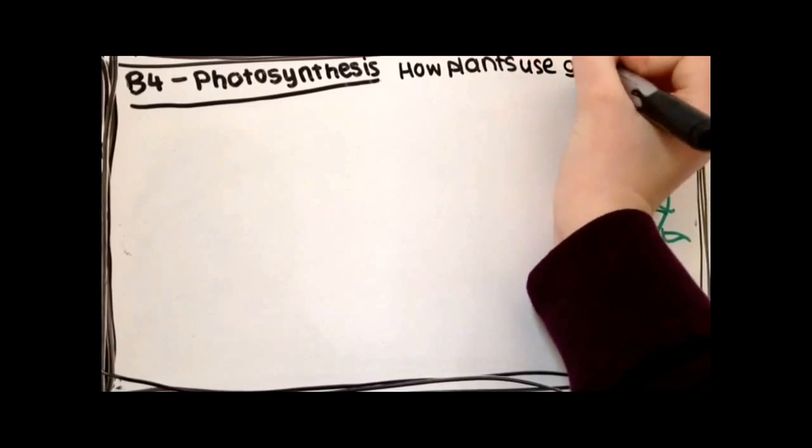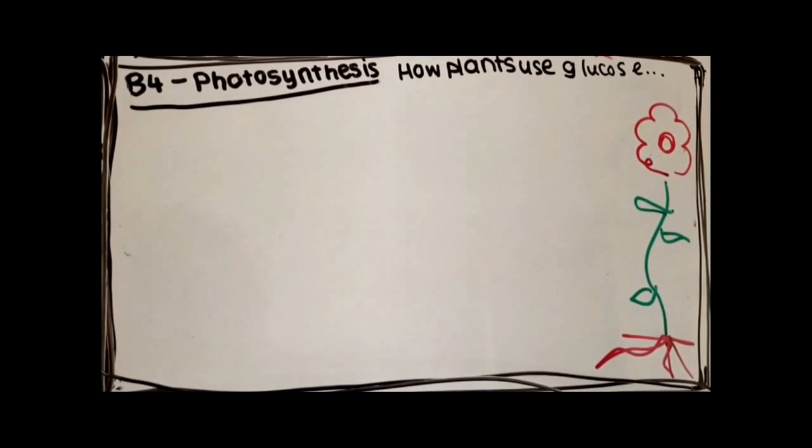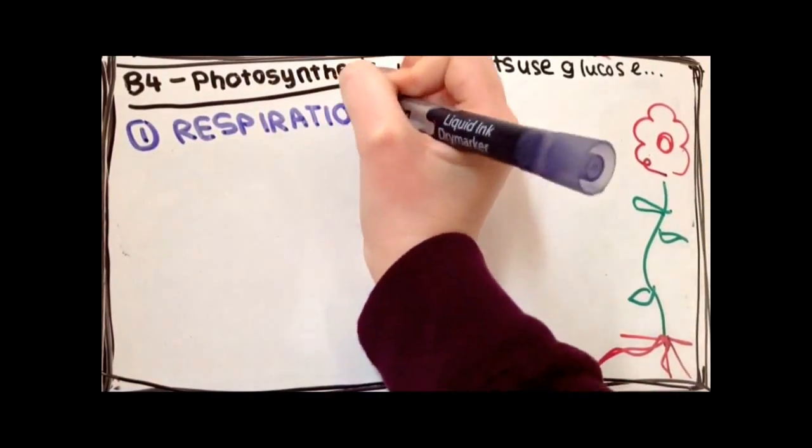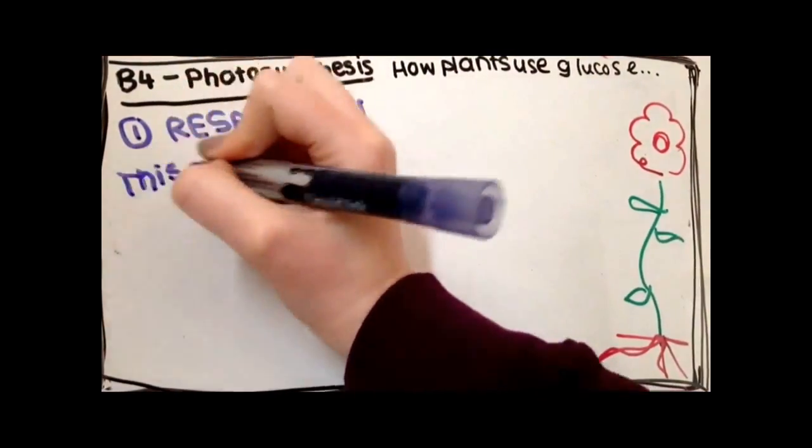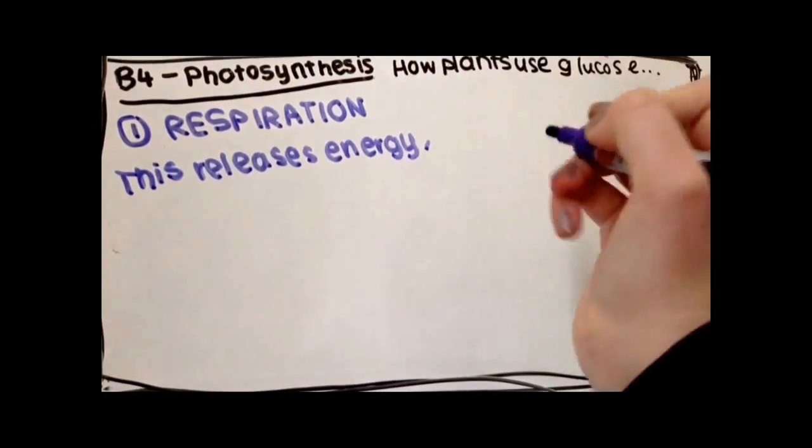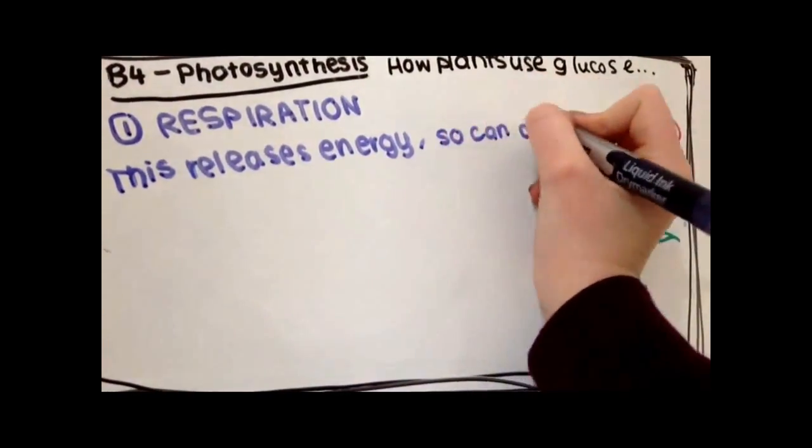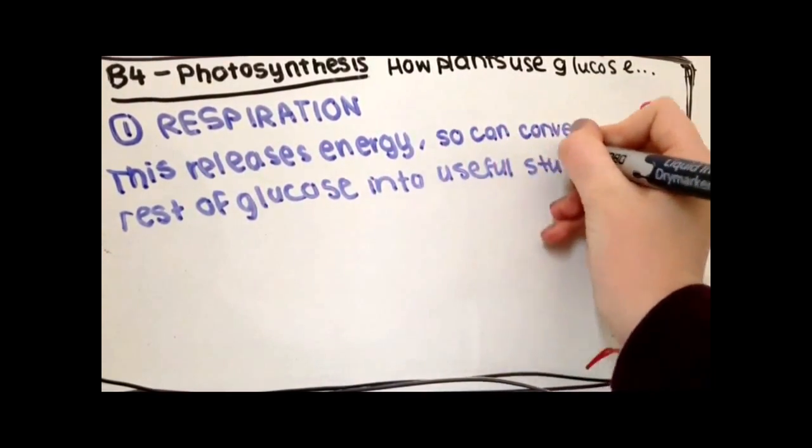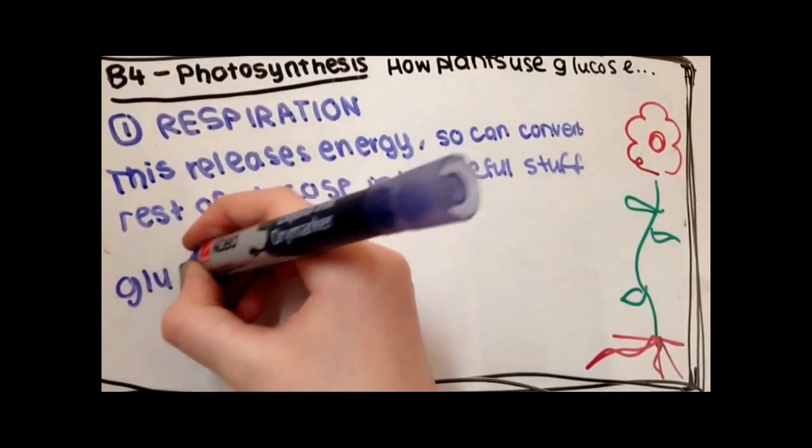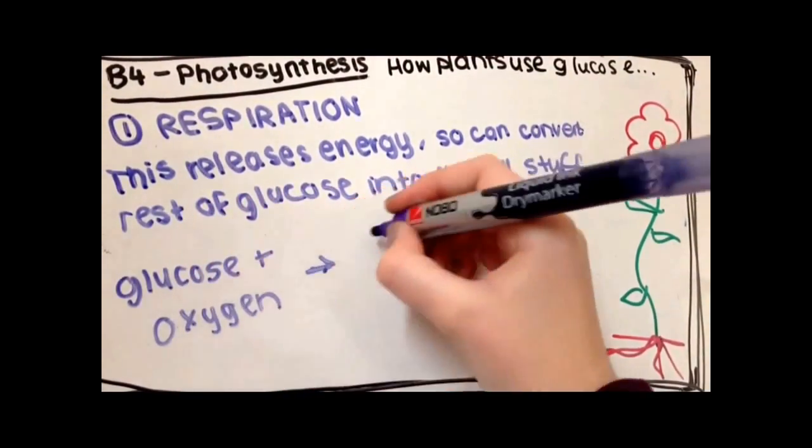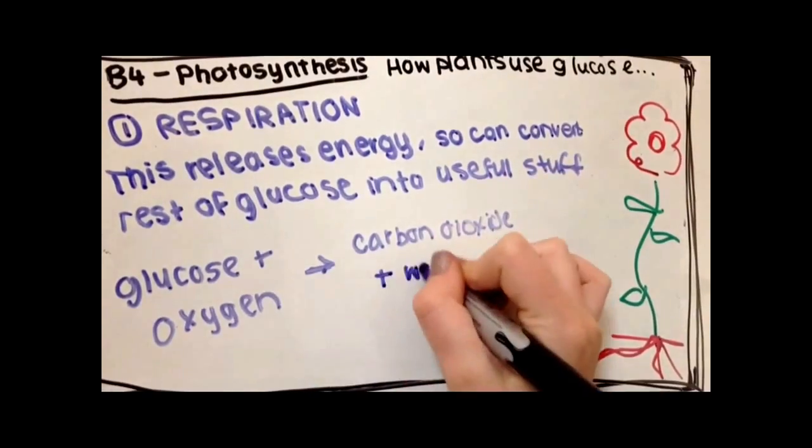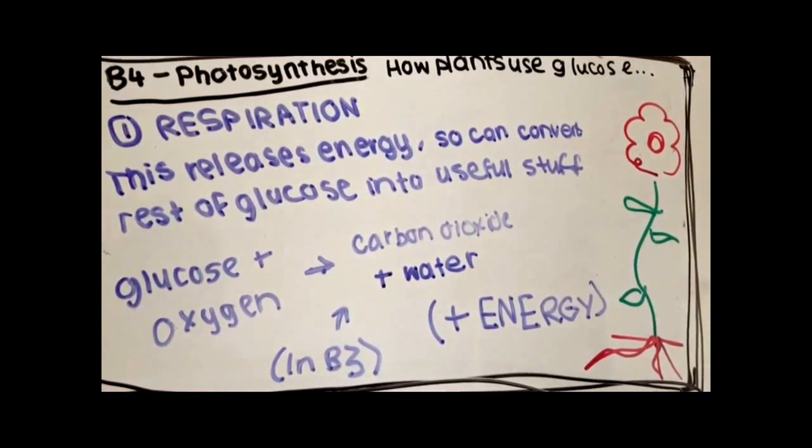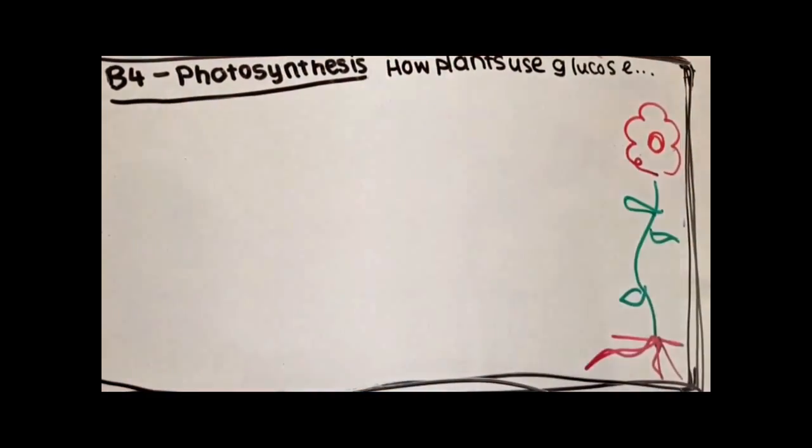How plants use the glucose they make. One of the things is for respiration. They use some of the glucose for this. This will release energy so they convert the rest of the glucose into various other useful substances using this energy. Remember that the word equation for respiration is glucose plus oxygen makes carbon dioxide plus water plus energy. So this is what some of the glucose is used for.